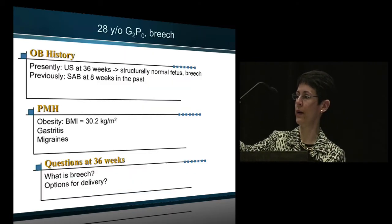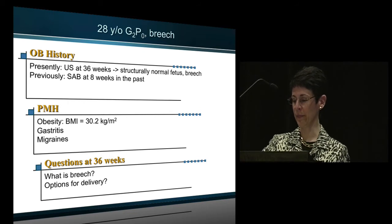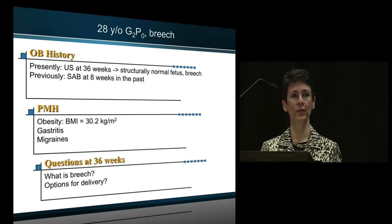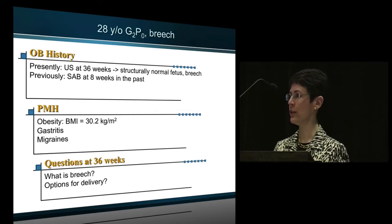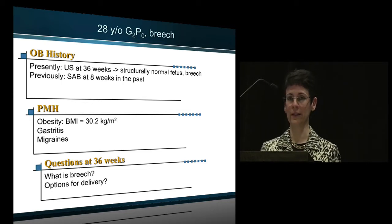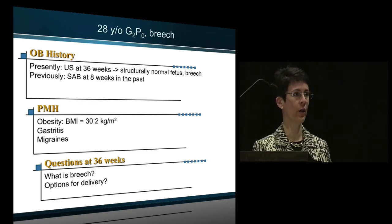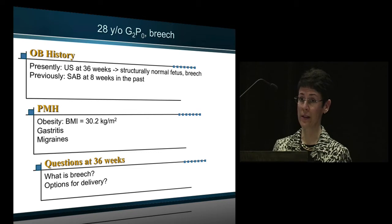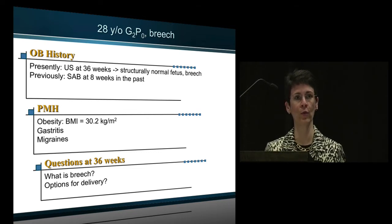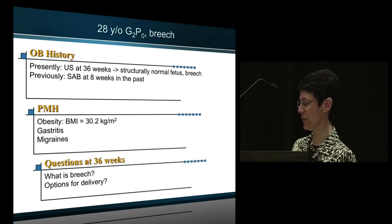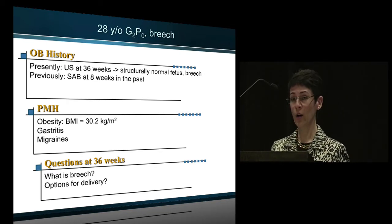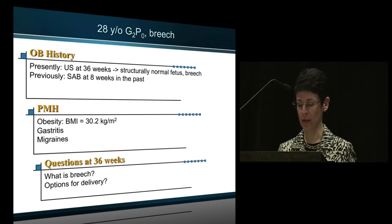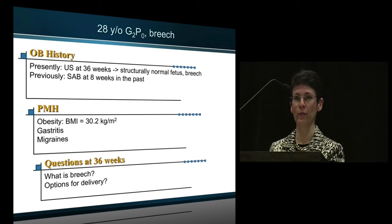Let me start with a patient scenario. Here is a woman who is 28 years old, G1P0. She had an ultrasound at 36 weeks gestation which revealed a structurally normal fetus in the breech position, a posterior placenta, a normal amount of amniotic fluid, and a structurally normal uterus. Her medical history is significant for obesity with a BMI of 30.2 kg/m², gastritis managed with omeprazole, and migraines. Her questions at the 36-week ultrasound were: what is breech, and what are my options for delivery? I'll be telling you about her intermittently throughout my talk.